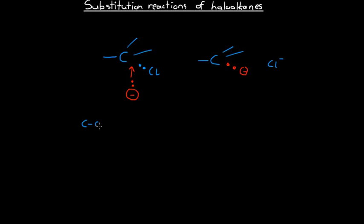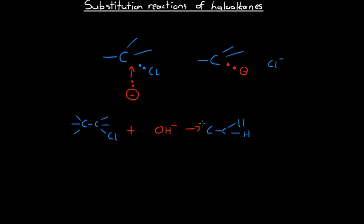This is often how we produce alkanols. For example, if we have chloroethane — not drawing in all the hydrogens, but all bonds coming off the carbons are bonded to hydrogens — we can have a chloroethane molecule react with a hydroxide ion. From there we end up with ethanol, with a hydroxyl group attached, and we're left with a chloride ion. So that's one way of producing ethanol from chloroethane.